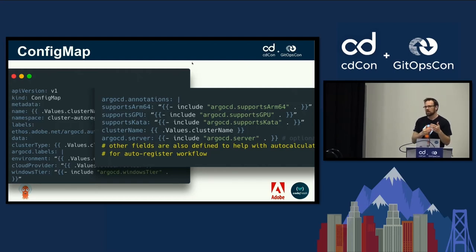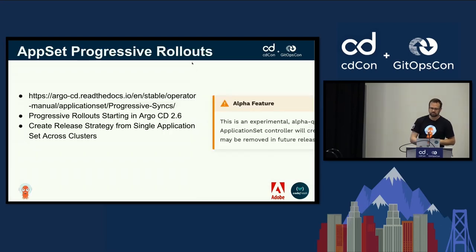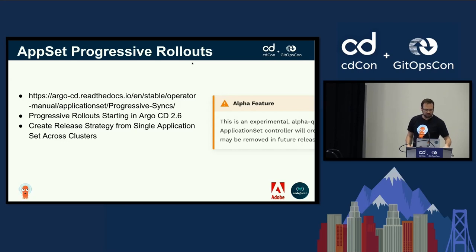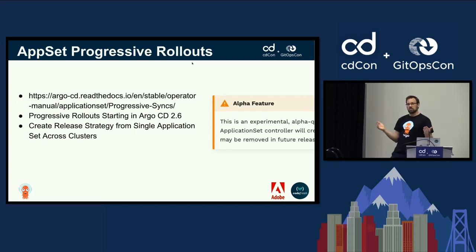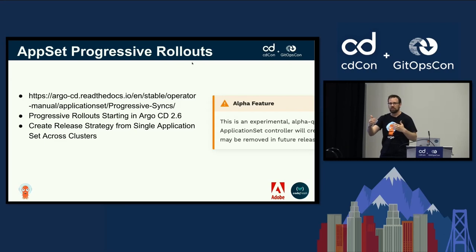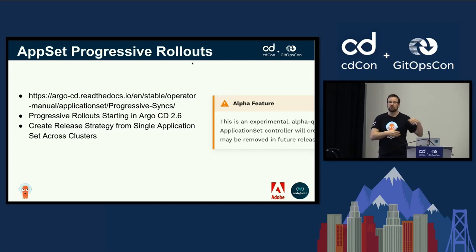The application set in Argo CD then automatically bootstraps and manages all of the applications on the cluster. It's a pretty simple workflow: cluster is created, triggers a workflow that grabs the details, pushes them to Argo CD, and Argo CD uses application sets to dynamically generate all the applications for that cluster — covering system space, security, and monitoring — so users can just start deploying. Another feature that can help here is application set progressive rollouts, a new feature that debuted in Argo CD 2.6, currently considered alpha.